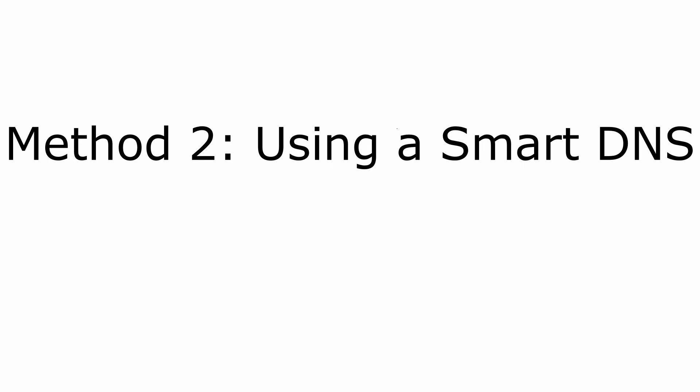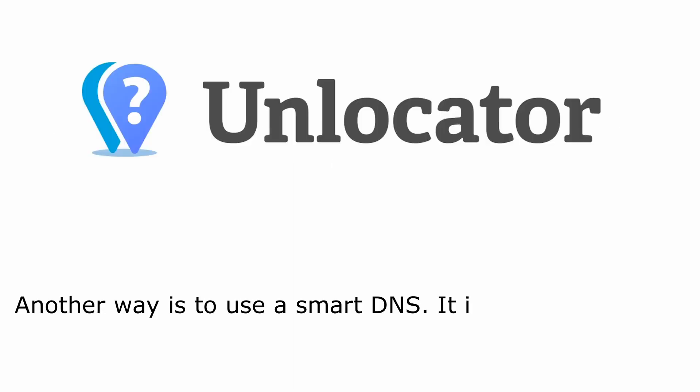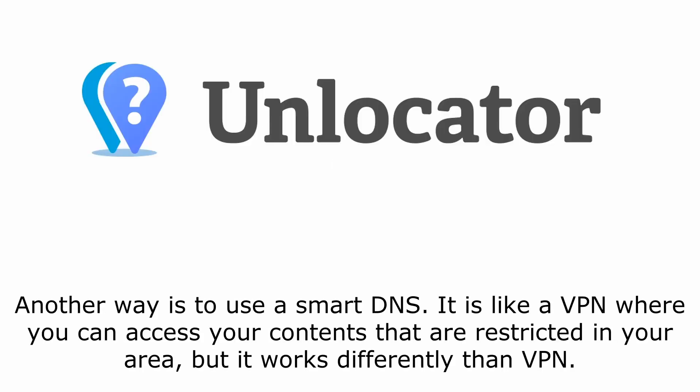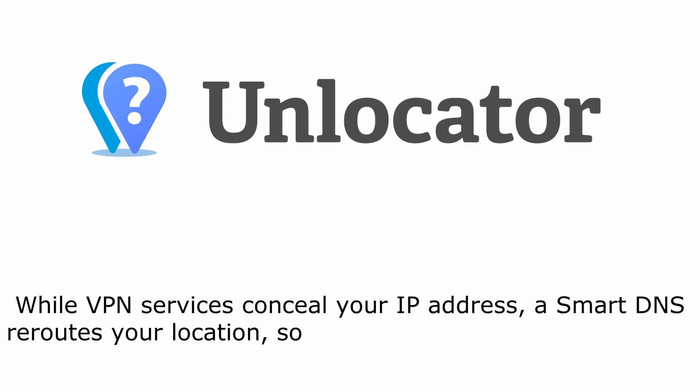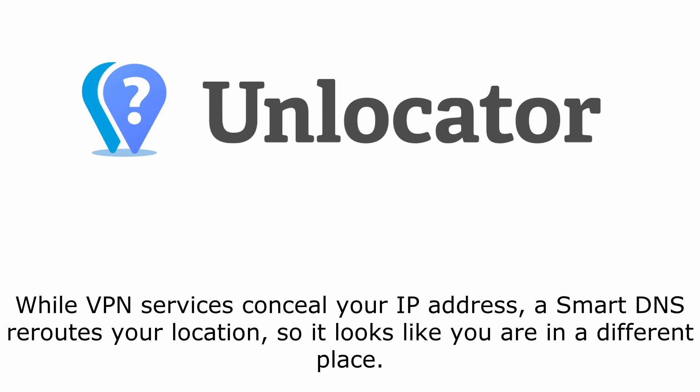Method 2: Using a Smart DNS. Another way is to use a Smart DNS. It is like a VPN where you can access contents that are restricted in your area, but it works differently than a VPN. While VPN services conceal your IP address, a Smart DNS reroutes your location, so it looks like you are in a different place.